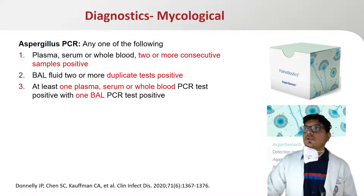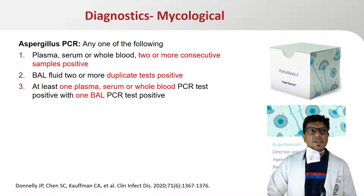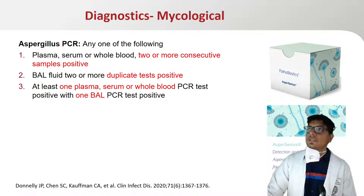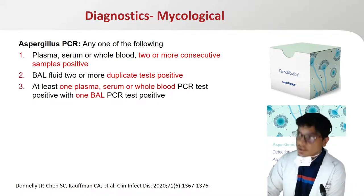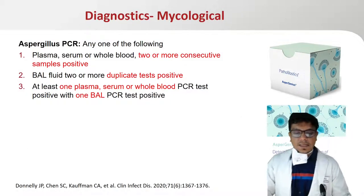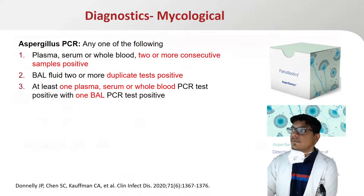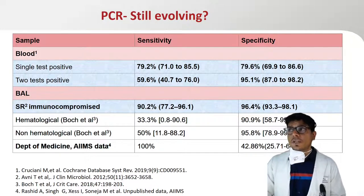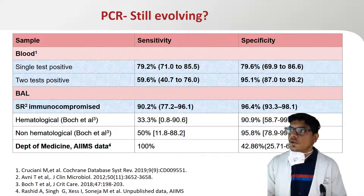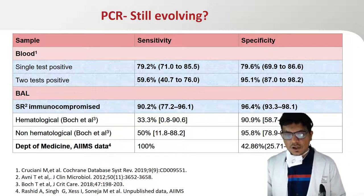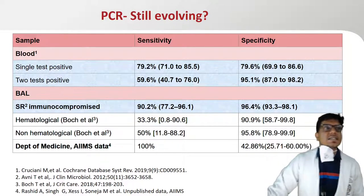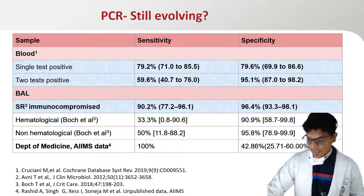Over the last five to six years, there is increasing evidence for use of Aspergillus PCR both in blood and BAL. Based on current criteria, two or more consecutive samples in plasma, serum, or blood, or for BAL, two or more duplicate tests or one paired sample, would be considered positive. BAL PCR compares better than serum, and the data is robust for immunocompromised patients with underlying neutropenia. For non-neutropenic patients, the evidence is not as strong. In our data, sensitivity is quite good; however, specificity for PCR is not as strong, and only the Aspergillus-specific assay is prospectively validated and standardized.